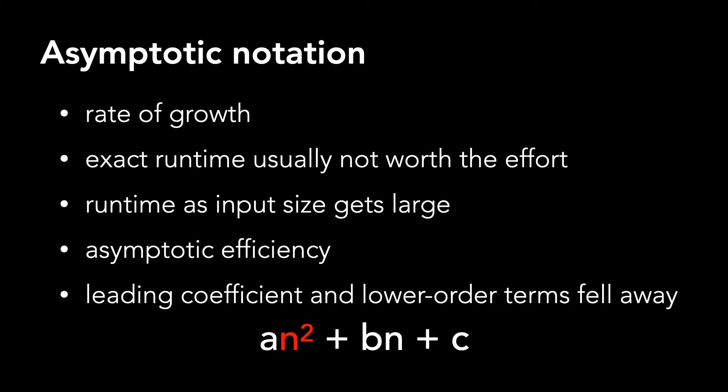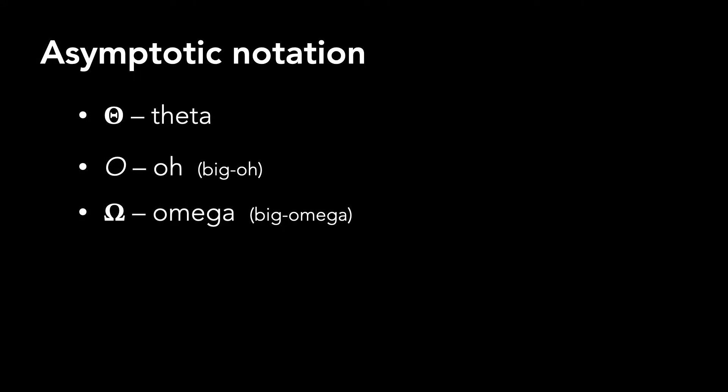In this video, I'll discuss different types of asymptotic notation, namely theta, O or big O, and omega or big omega.